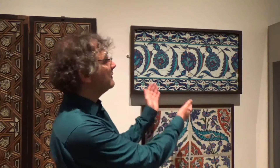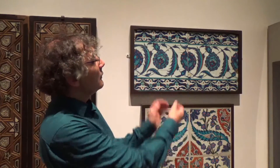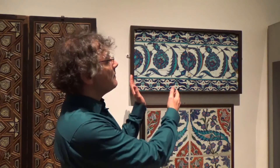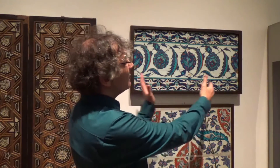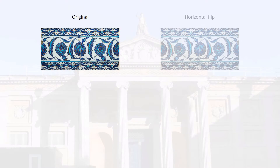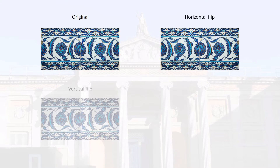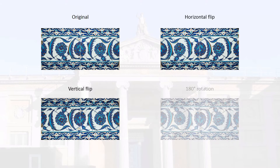Returning to the pair of Ottoman tiles, we notice that this pattern has fewer symmetries. Because of the way the flowers and leaves are arranged, it only has translational symmetry, but no other symmetries. If we reflect it or rotate it, we get different looking patterns, with the flowers pointing down rather than up, or right rather than left.